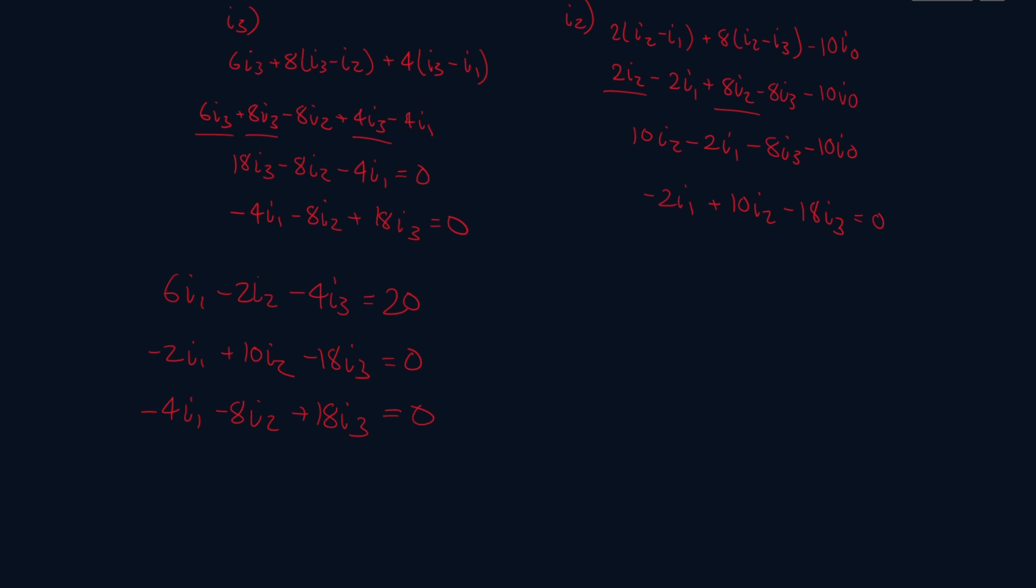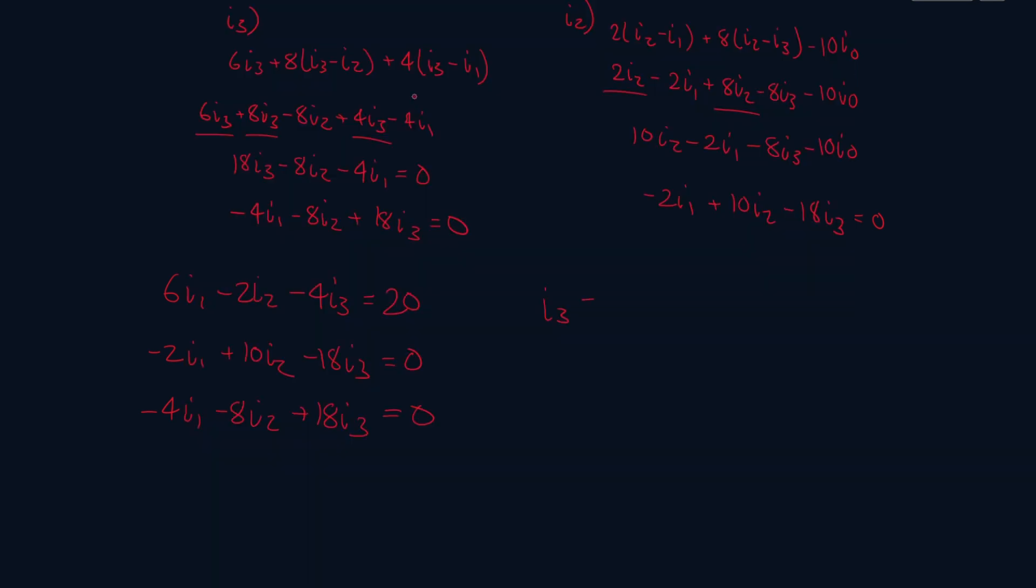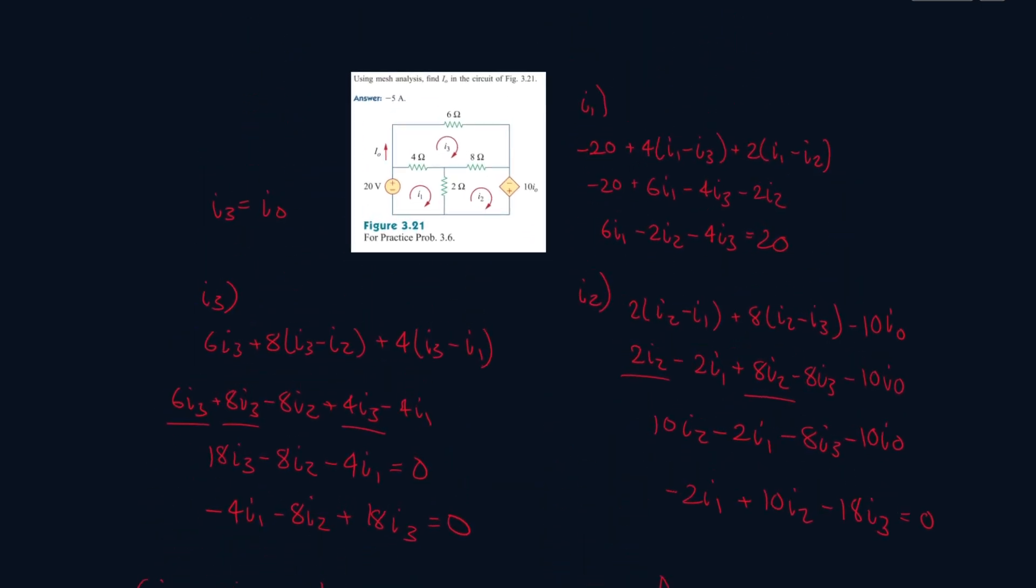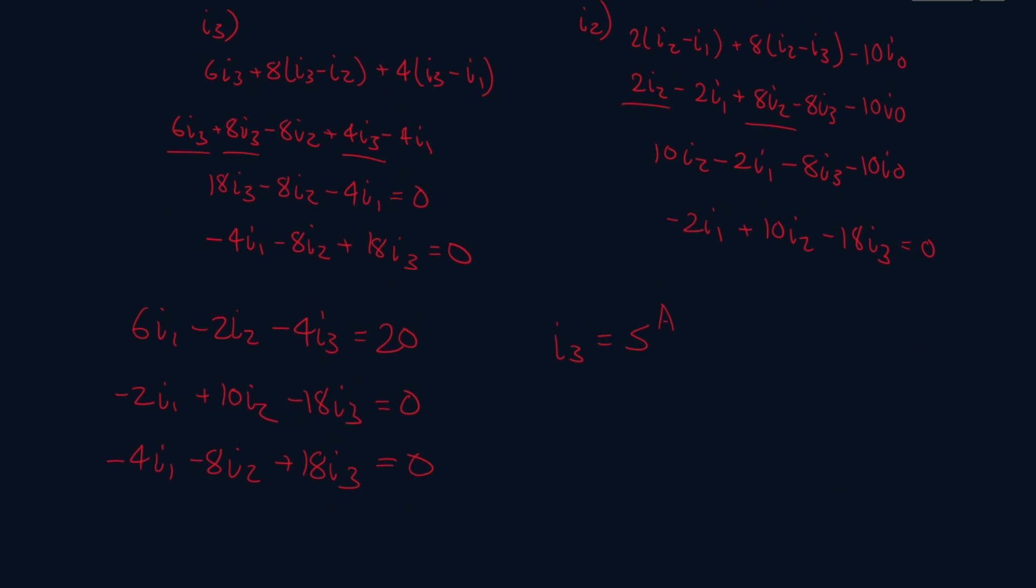And then if you put it to MATLAB or solve it individually, you'll notice you get I3 equals 5 amps. And they want to know what IO is. And since you know IO is equal to I3, IO will be equal to 5 amps.